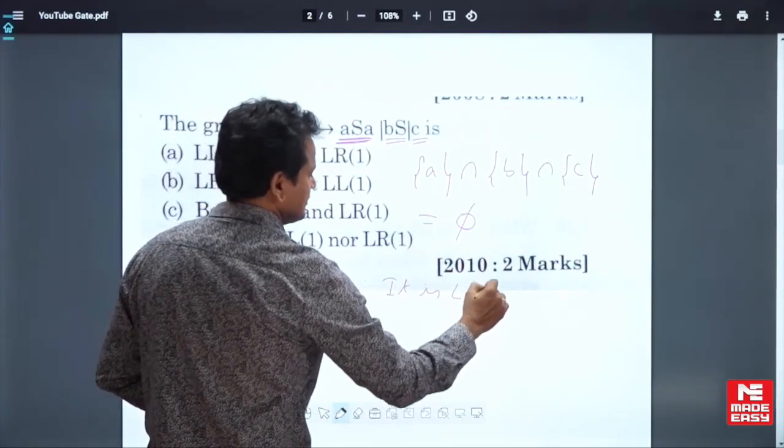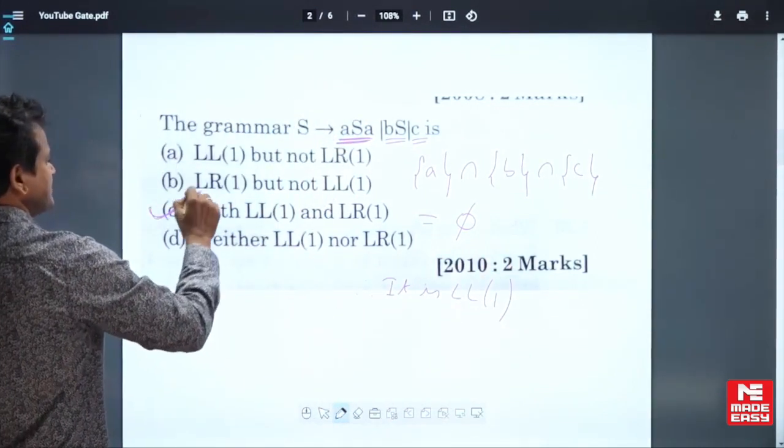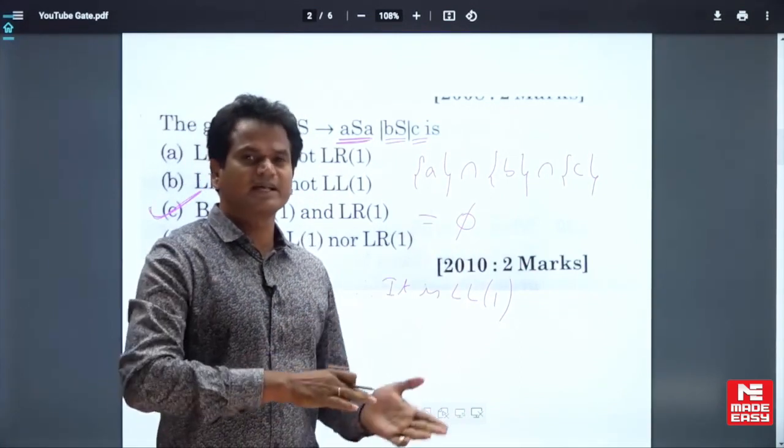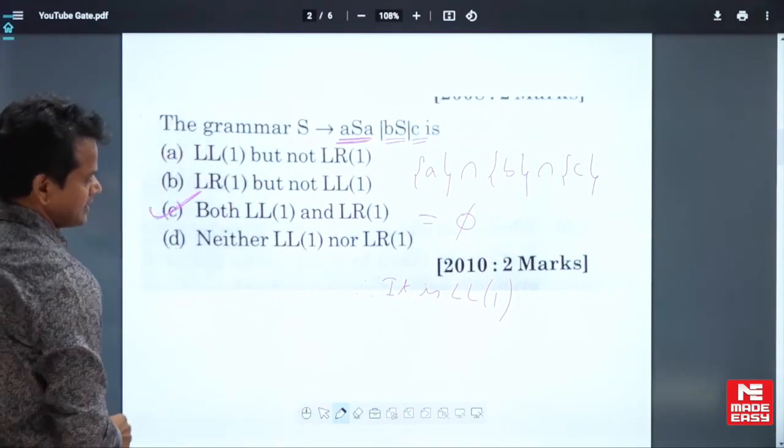When a grammar is LL(1), it is also LR(1). Then go for this one. It is very simple. So when it is LL(1), do not go for the checking of LR(1), because every LL(1) is also LR(1). So the answer is both LL(1) and LR(1).